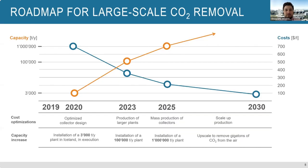Our roadmap is to scale from niche markets or smaller plants at several thousand tons per year to bigger plants with billion-ton-per-year capacity. By doing this, we can bring the price down through economies of scale and lower energy costs. It's really key that we start early, because the scales we will need require us to start scaling now — otherwise we won't get there in time.